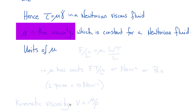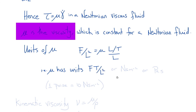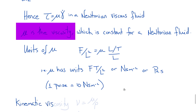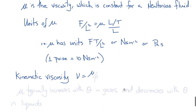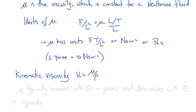Let's consider the units of mu. The units of shear stress are force over area — force over length squared — and the units of shear rate are 1 over time. Therefore, mu must have units of force times time over length squared, or newton-seconds per meter squared, or pascal-seconds. In CGS units, you'll see the term poise, and 1 poise is 0.1 pascal-seconds. We'll also sometimes see the kinematic viscosity, defined as mu divided by rho, the density.